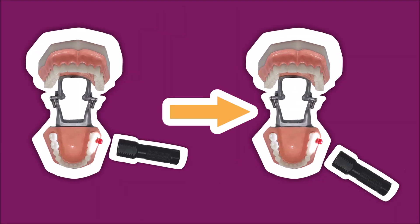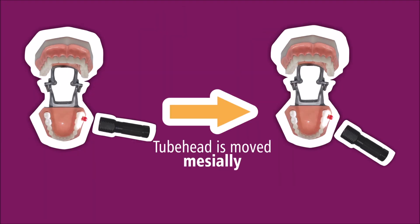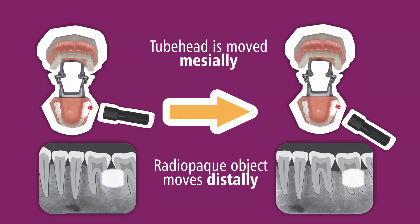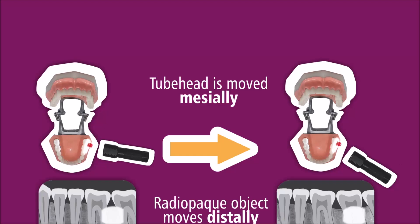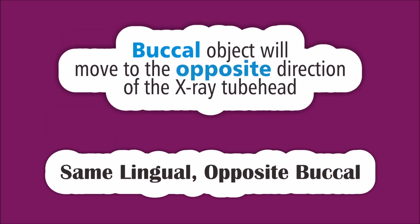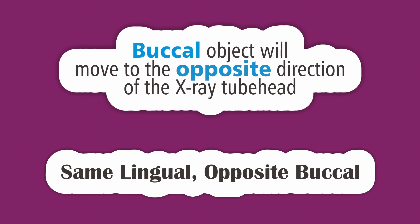The tube head is moved mesially, but on the radiograph the radiopaque object moves distally. So a buccal object will move in the opposite direction of the x-ray tube head — this is the second phrase: Opposite Buccal.